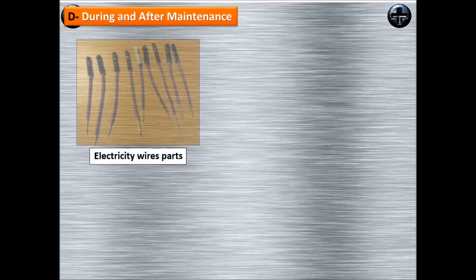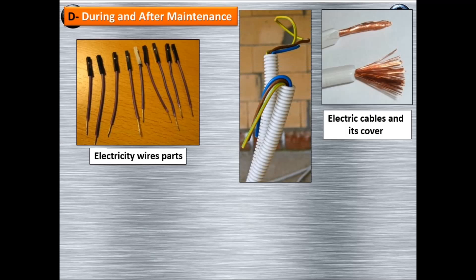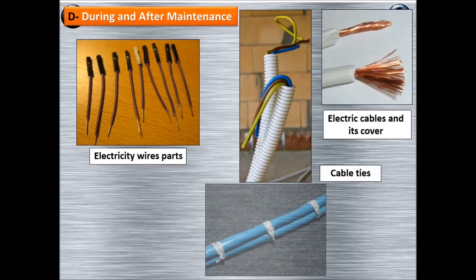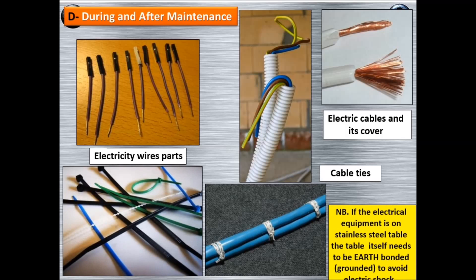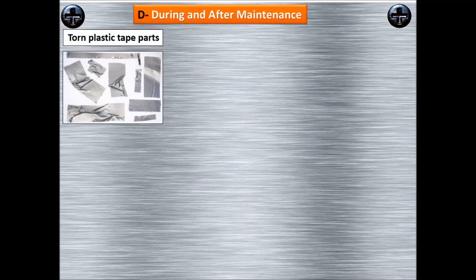Number D: physical contamination during and after maintenance. Sources include electricity wire parts, electric cables and their covers, and cable ties. There is also a note from Mr. Steve: if electrical equipment is on a stainless steel table, the table itself needs to be earth-bonded or earth-grounded to avoid electric shock. We must all take attention at this point.